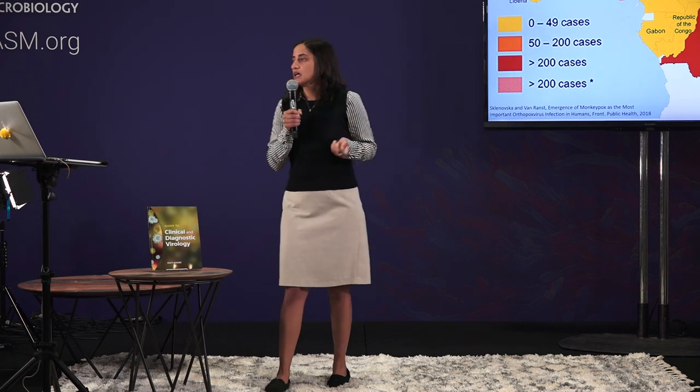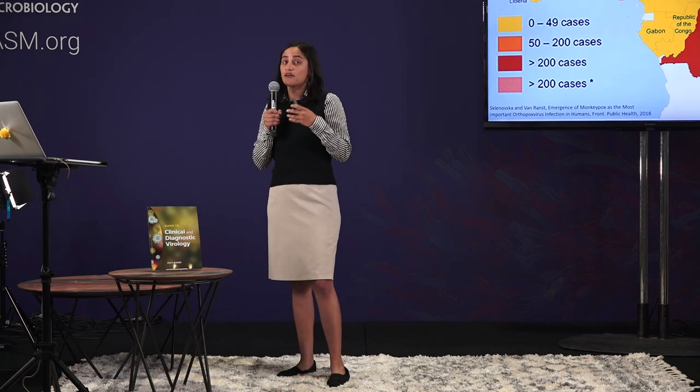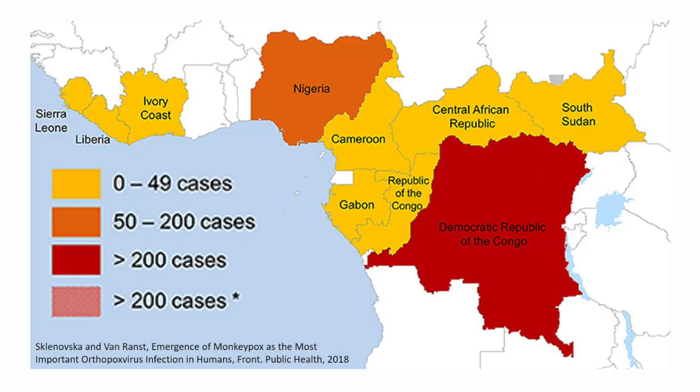So back to monkeypox. Until recently, monkeypox was primarily limited to some West African and Central African countries — though that doesn't mean it wasn't seen anywhere else. In 2003, there was actually a pretty large outbreak here in the U.S., primarily in the upper Midwestern states. Some animals had been brought in from Africa for sale as exotic pets, and monkeypox hitched a ride. It was transmitted from those animals to prairie dogs that were housed in the same facility.